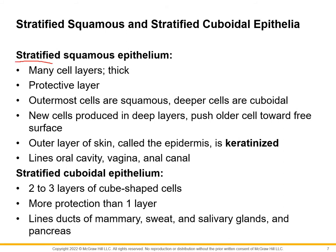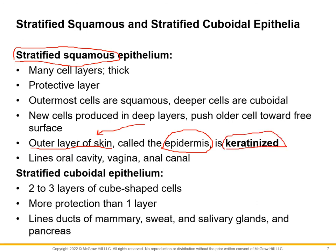Moving on to stratified tissues: stratified squamous was the first one we looked at in lab, along with transitional. Stratified squamous is the outer layer of the skin — specifically the epidermis. What we looked at is the keratinized type. There is also an unkeratinized portion found at entryways into the body with a moist membrane, but we're focused on the keratinized part. Stratified squamous means multiple cell layers thick of flattened cells.